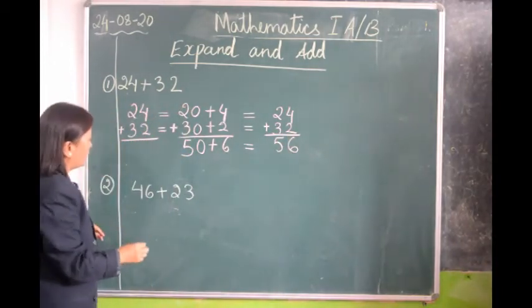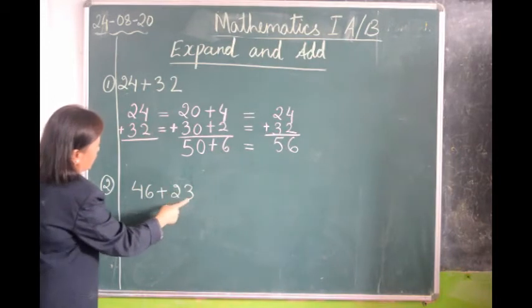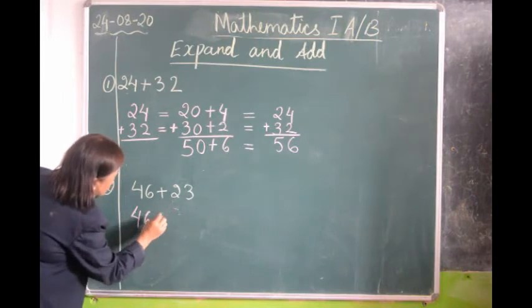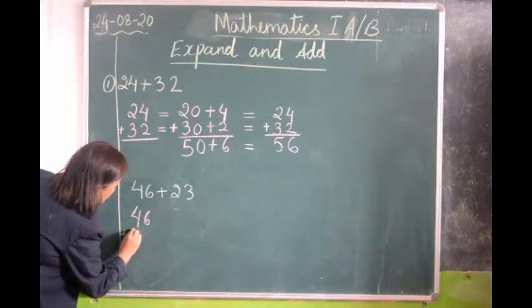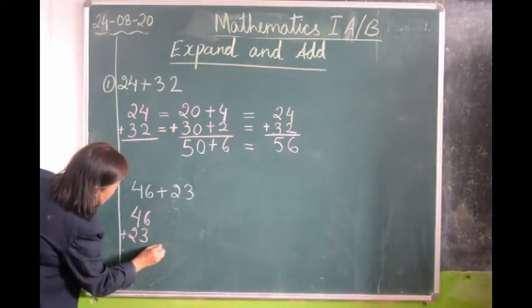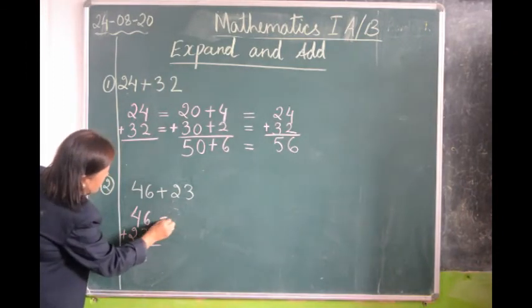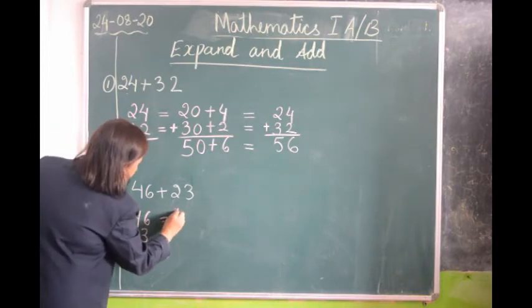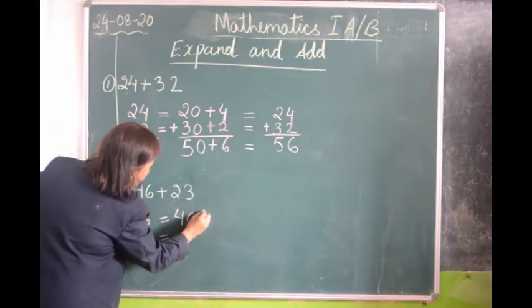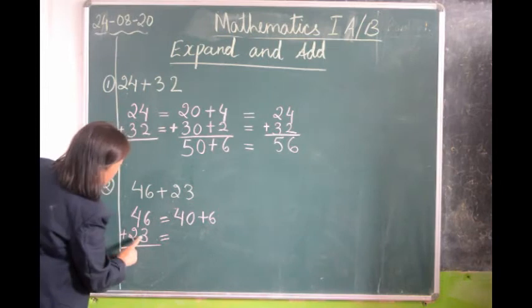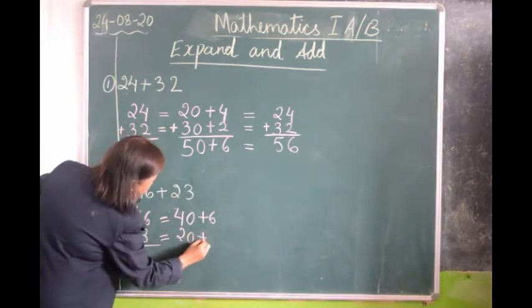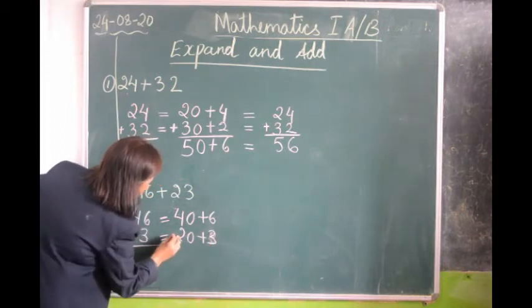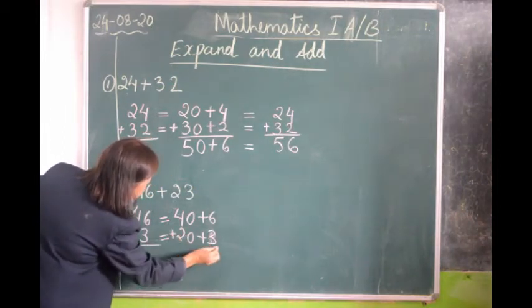Let's take another example. 46 plus 23. We will arrange these numbers in vertical line. 46 plus 23. We will draw a line. We will write the sign here and draw a line.